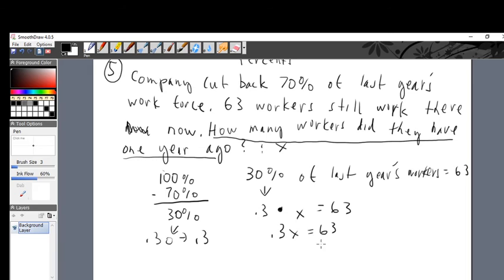So 0.3x is equal to 63. 0.3 times x equals 63. We want x, we want to know how many workers last year. Divide by 0.3 on the left, divide by 0.3 on the right. You get x. Take out your calculator: 63 divided by 0.3 is 210.